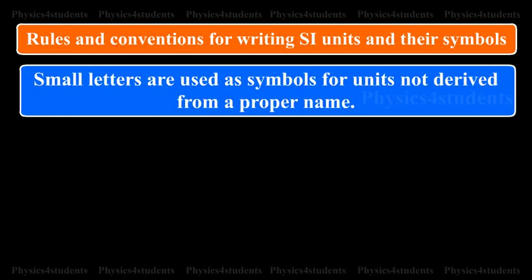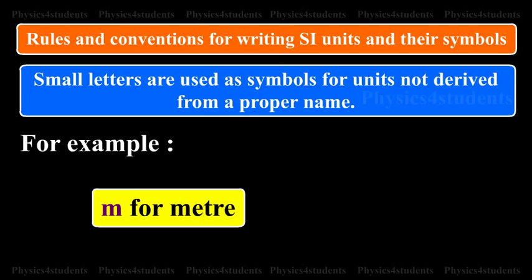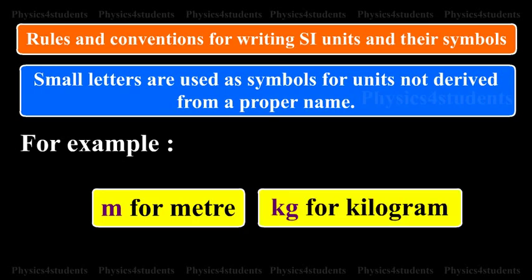Small letters are used as symbols for units not derived from a proper name. For example, m for meter, kg for kilogram.